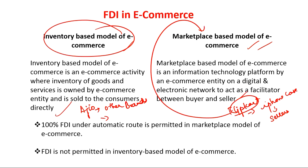So in the 2016 FDI guidelines for e-commerce, 100% FDI on the automatic route was allowed in the marketplace model, while FDI was not permitted in the inventory-based model. The rationale is that e-commerce companies receiving huge capital infusion from abroad through FDI, with their high technological proficiency and large capital to spend on popularizing their products, might create problems for domestic manufacturers in India. To guard domestic manufacturers from capital-rich e-commerce entities, the government did not allow FDI inflow into the inventory-based model.